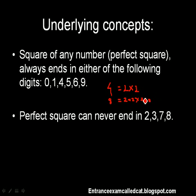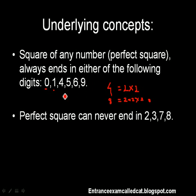So let us understand this concept. A square of any perfect square always ends in either of the following digits: it can end in 0, 1, 4, 5, 6, or 9. The question is — why?